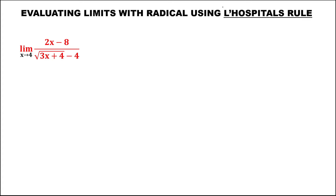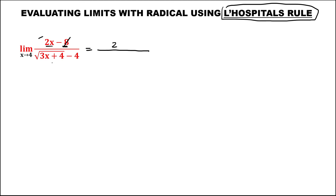For the given limit, to evaluate using L'Hopital's rule, first find the derivative of the numerator: the derivative of 2x is 2, and the derivative of the constant is 0. Then for the derivative of the denominator, since it contains a radical, the numerator part is the derivative of 3x, which is 3. The derivative of the constant is 0. Then add 2 and copy the given: 3x plus 4. The derivative of negative 4 is 0.